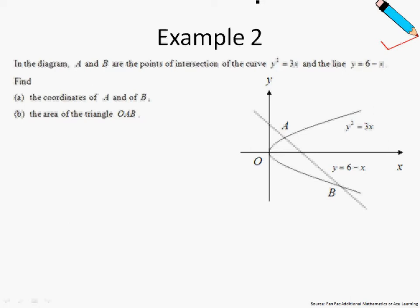So the question asked to solve for the point of intersection given as A and B of this curve and this line. Let me just write out the equation of the curve and the line on the top left hand corner of the screen. So this is the equation of the curve y² = 3x and this is the given equation of the line y = 6 - x.